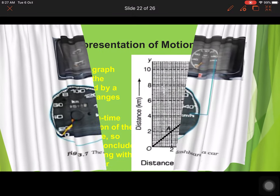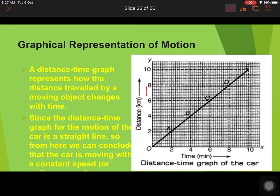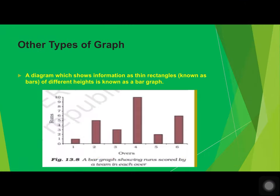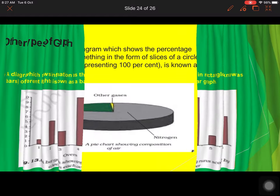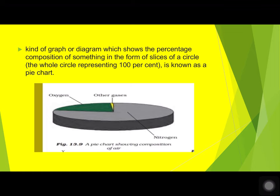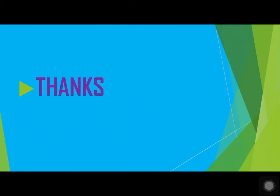Next is graphical representation of motion. A distance-time graph represents how the distance traveled by a moving object changes with time — distance on one axis and time on the other. When the graph gives a constant speed, it represents uniform motion. Another type is the bar graph, where information is shown as thin rectangles. A pie chart shows percentage composition in the form of slices of a circle. This completes the chapter — hope you liked the video, thanks for watching.